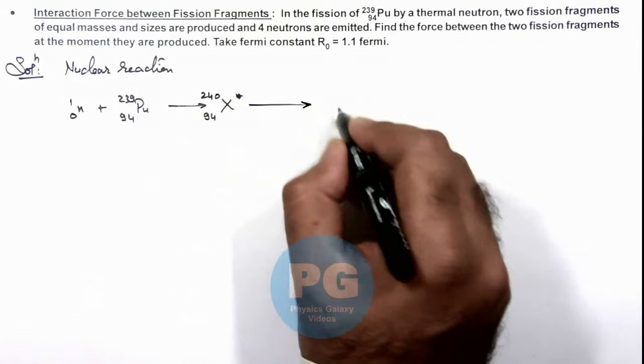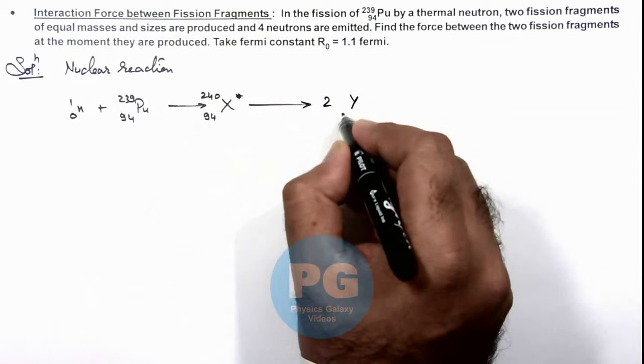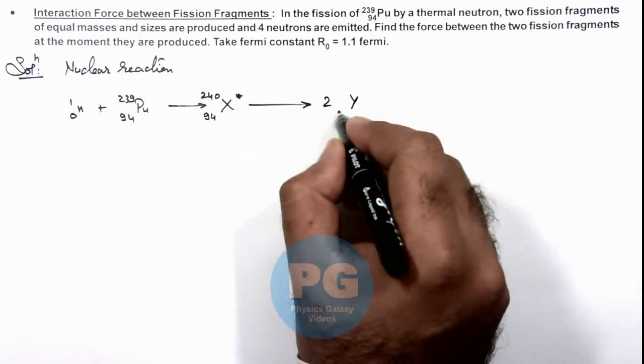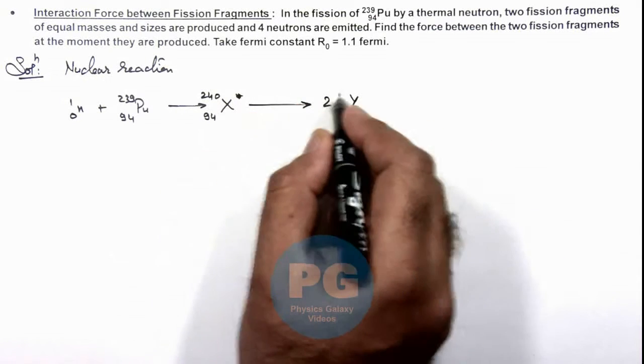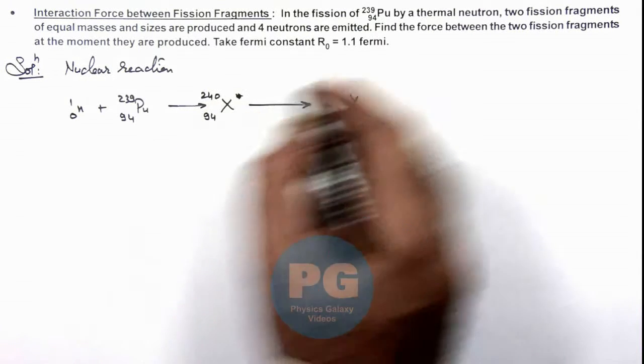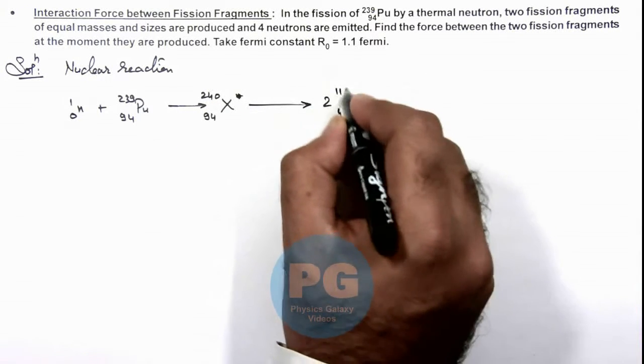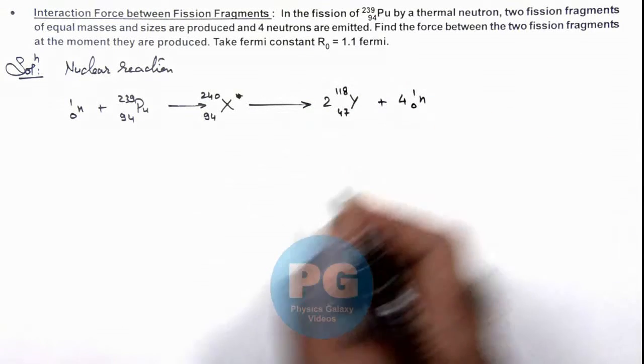To two identical fragments which we are considering as Y, with nuclear charge 47, and we can take nuclear mass to be mass 240 minus 4 by 2, that is 118. As we are given that four neutrons are also emitted in the process.